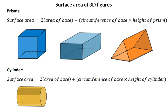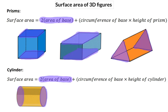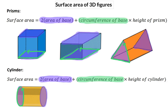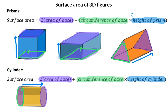Moving back to the surface area of three-dimensional figures — you can simply determine the area of each side of the figure and then add them up, or you can choose to use general formulas. For any prism as well as the cylinder, the surface area can be determined by taking two times the area of the base plus the circumference of the base multiplied by the height, where the height is the distance between the two bases.